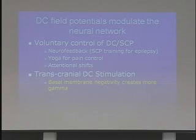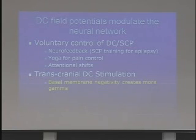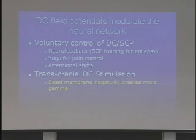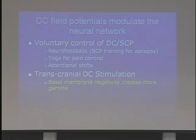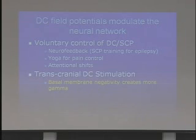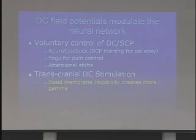The DC field potentials can literally modulate neural networks. You can actually turn on or off brain areas using DC field potentials. The direct current field potentials control the AC EEG — the alternating currents you see as the EEG, the oscillatory patterns we used to print out on paper. Voluntary control over these direct current field potentials is well established.